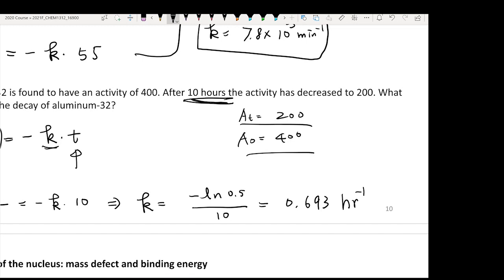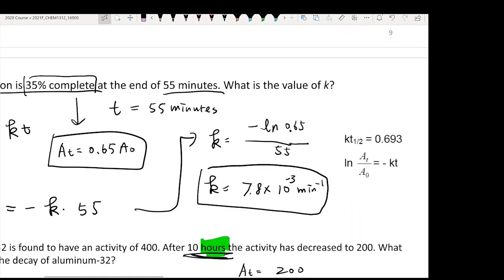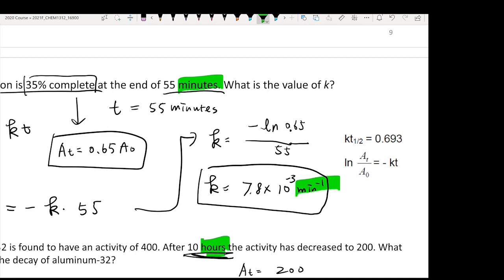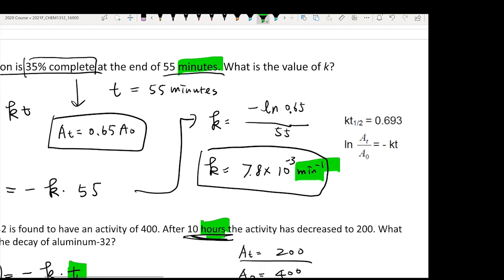You should notice that the unit you got is going to associate with the unit you put in. So if your t here uses hours, then it becomes per hours. If you use minutes, it becomes per minute.